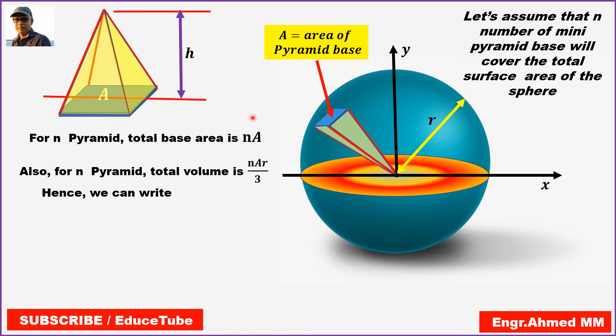Because if we multiply mini pyramid area by n number of mini pyramids for the whole sphere, surely it will give us the surface area, I mean total area for this sphere. So let's write in that way.